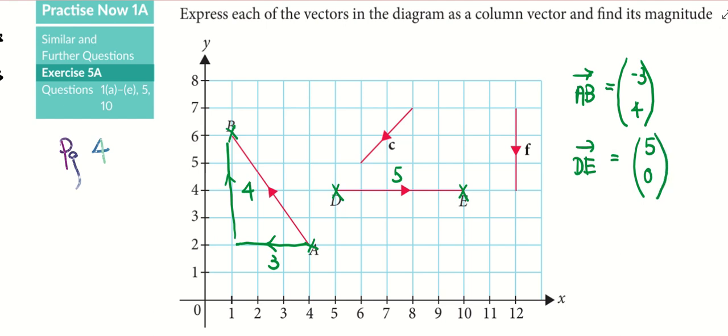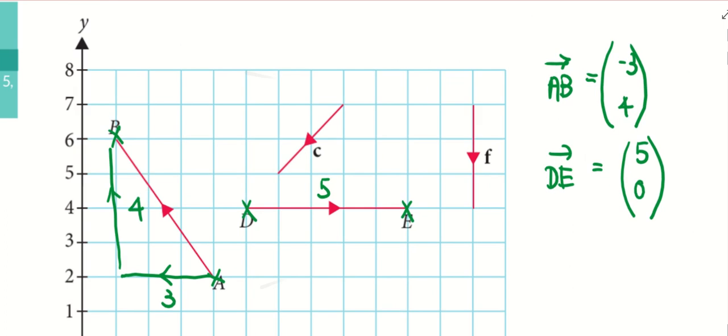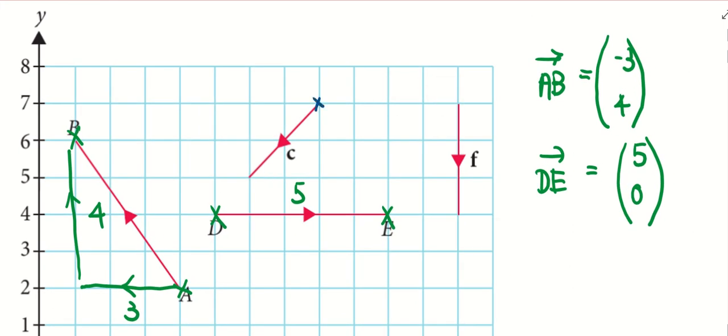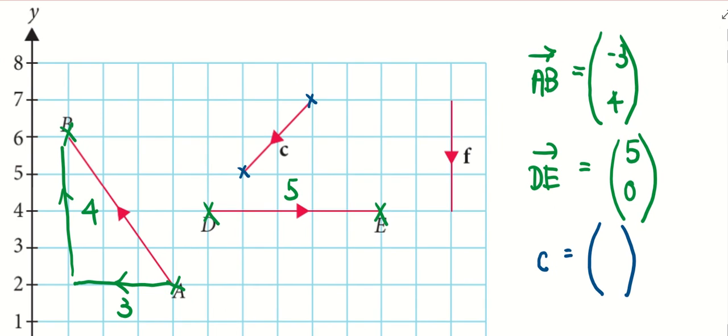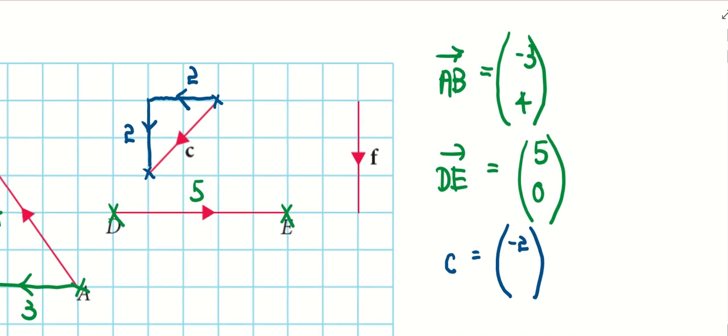For the next vector called C, notice the start point is on top, the end point is below. This is vector C. It must be a column vector, column matrix. I move in the X direction first. It's moving towards the left 2 units, so I write negative 2. After that, I need to go down 2 units. So what should be the number below? Negative 2.